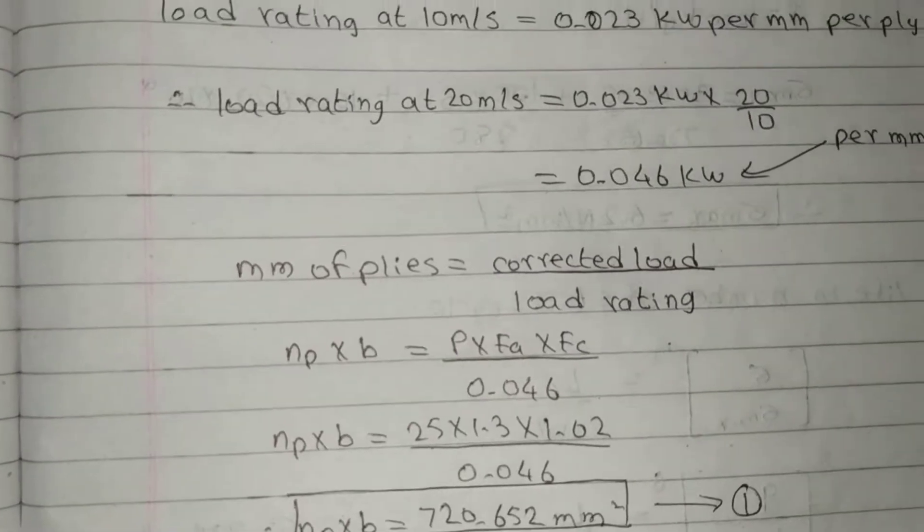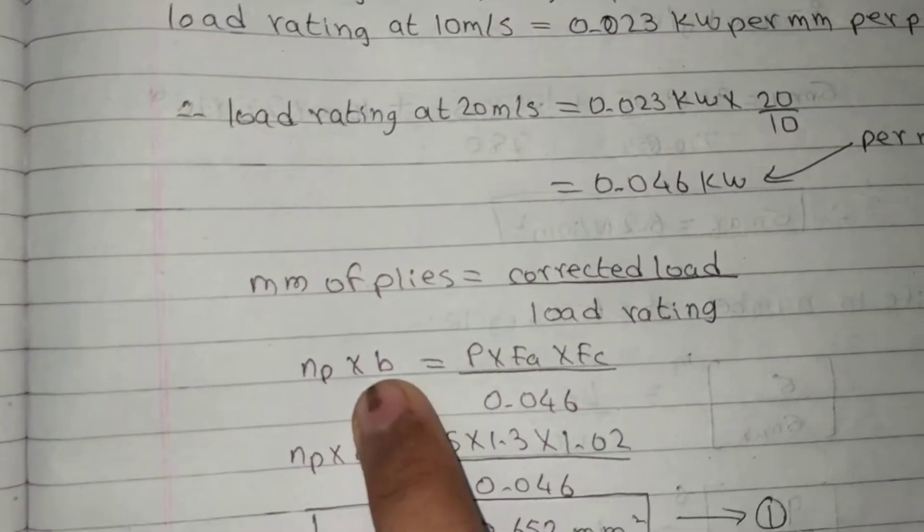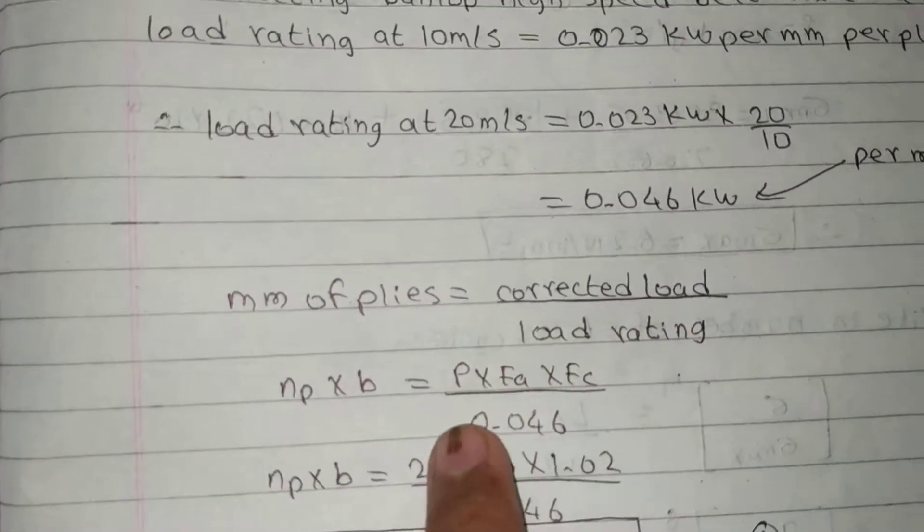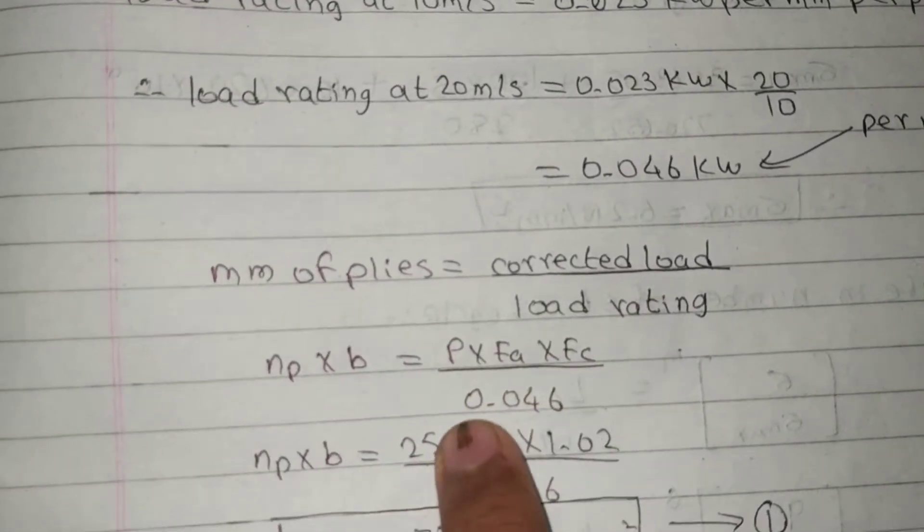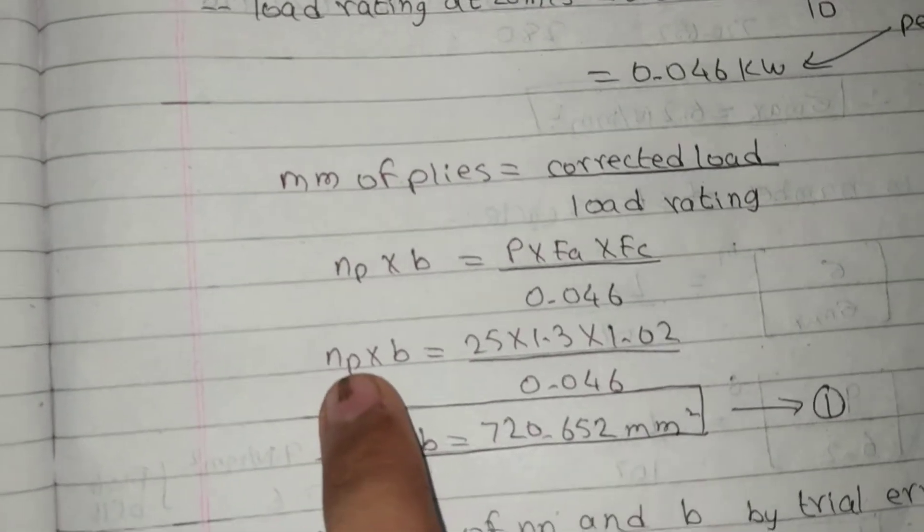Number of plies, this is our formula: corrected load upon load rating. NP into B. Corrected load P into FA into FC upon 0.046 load rating. NP and B.